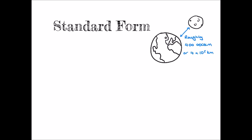In this video, we're going to look at what we mean by the term standard form and how we can convert between numbers in standard form and ordinary numbers. A number written in standard form looks like this: it's some number a times 10 to the power of some other number n. A will always be a number greater than or equal to 1 and less than 10, and n must be a whole number or an integer.